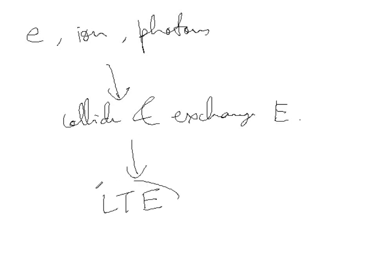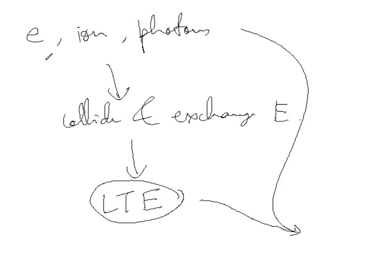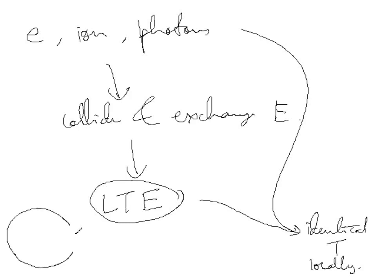I will talk about LTE in more details in a later class. As a result of the establishment of local thermodynamic equilibrium, all of these — the ions, electrons, and photons — they have identical temperatures locally. This is very important. I am not talking about globally, because in different parts of the star the temperatures are different. A star is never in global thermal equilibrium.